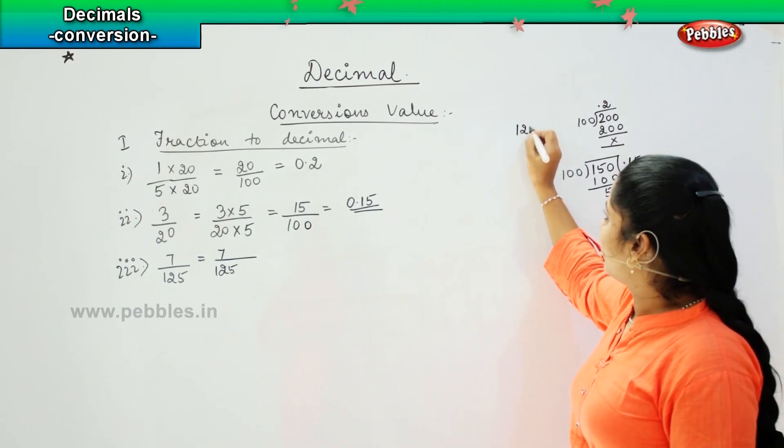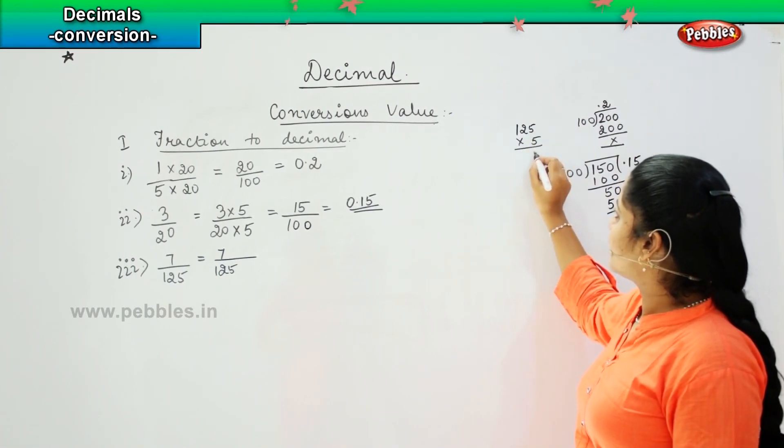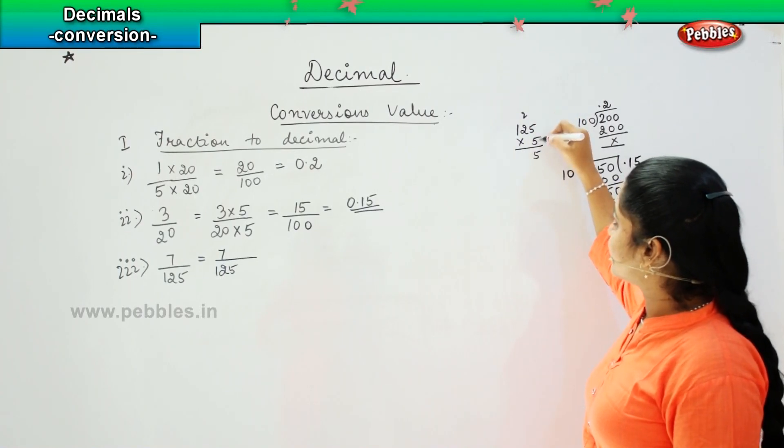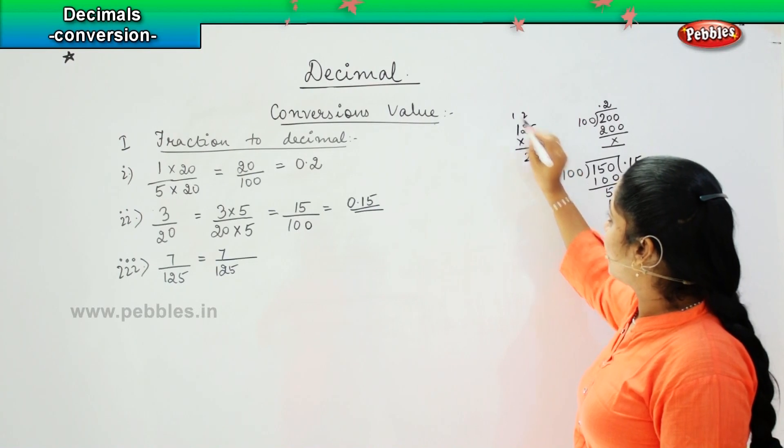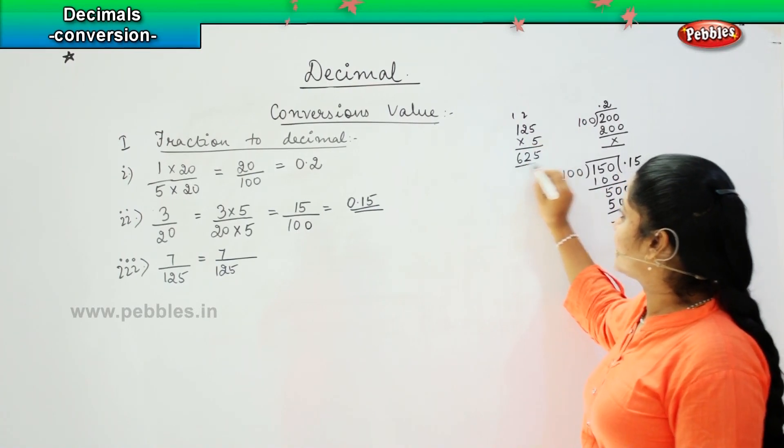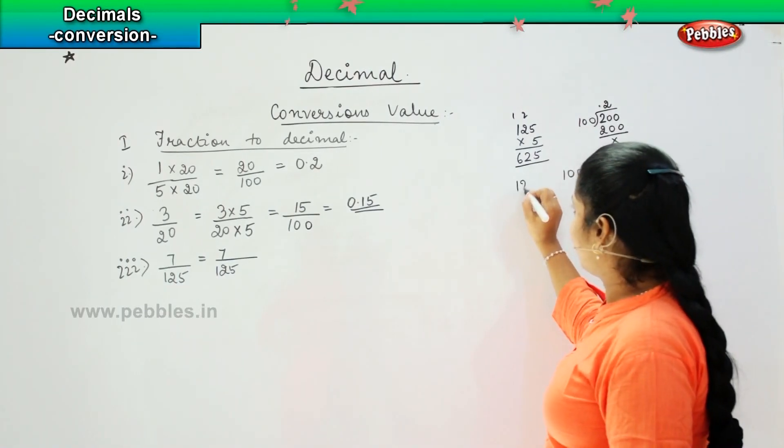So 125 into 5 is how much? 5 × 5 are 25, carry 2. 2 × 5 are 10, 10 plus 2 is 12, carry 1. 1 × 5 are 5, 5 plus 2, 1 is 6, so 625. So it has to be multiplied more, right? Shall we try 7?